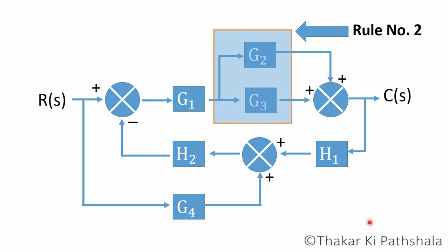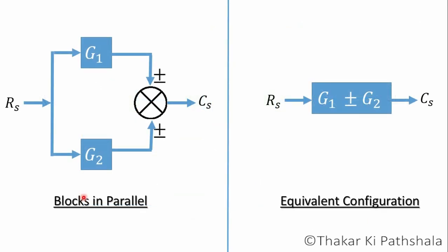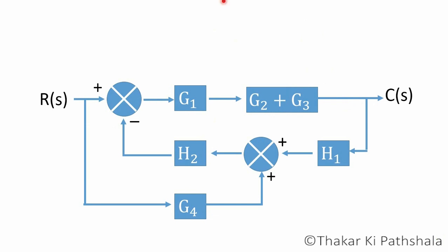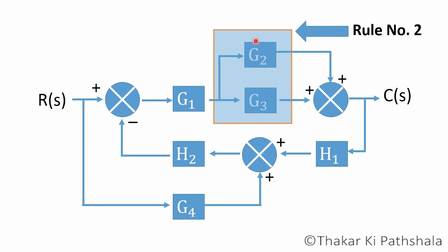Let's come back to this. So rule number two tells that if two or more blocks are in parallel, then we can add them algebraically and reduce into one. By applying rule number two in this situation, we can get the reduced version of block diagram. The two separate blocks of gain are now being represented by one block in which both gains are added.